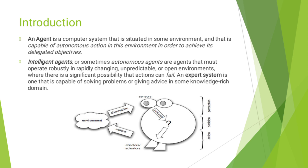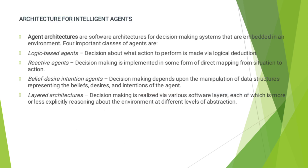Intelligent Agents are sometimes called autonomous agents — agents that must operate robustly in rapidly changing, unpredictable, or open environments where there is a significant possibility that actions can fail. An expert system is one that is capable of solving problems or giving advice in some knowledge-rich domain. Here, I have given one diagram representing the environment of the agent, where the agent perceives the environment through sensors and actuators.